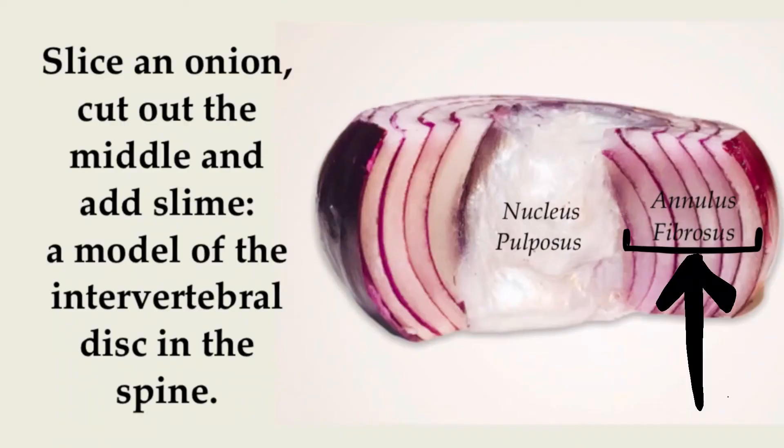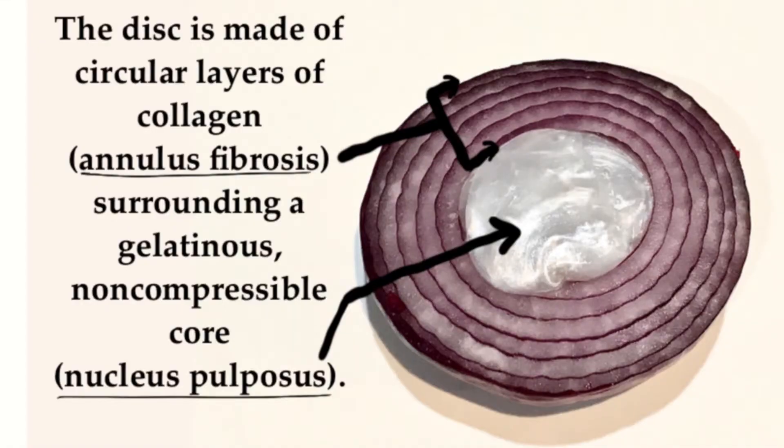Let's take a closer look at the disintegration of the intervertebral discs. This process typically occurs in middle-aged spines — 30s, 40s, 50s. I would like to use an analogy. Think of the intervertebral disc as a sliced onion with a core of white slime stuffed inside of it. The white slime represents the gelatinous inner core, which is called the nucleus pulposus. And the onion slice represents the tough layers of the annulus, which are tightly wrapped around the nucleus in a circular pattern.